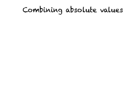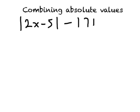In this part we're going to talk about how to graph, think about, or combine absolute values. Let's take a concrete example: the absolute value of 2x minus 5, minus the absolute value of 7 plus 3x. We're going to work on how to combine these two absolute values to get ourselves a piecewise function.